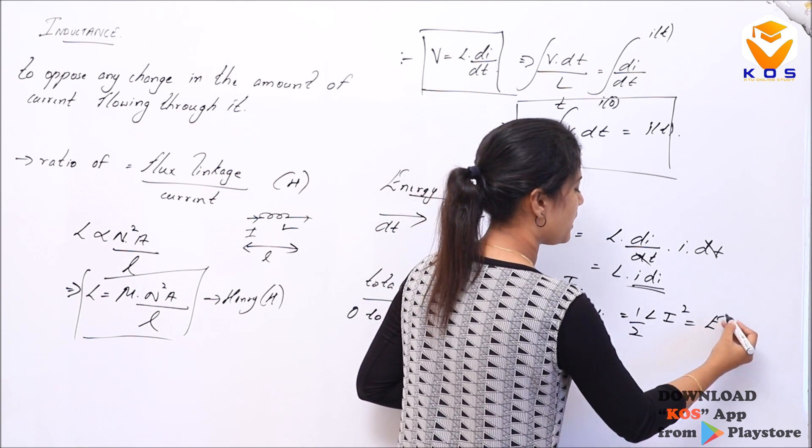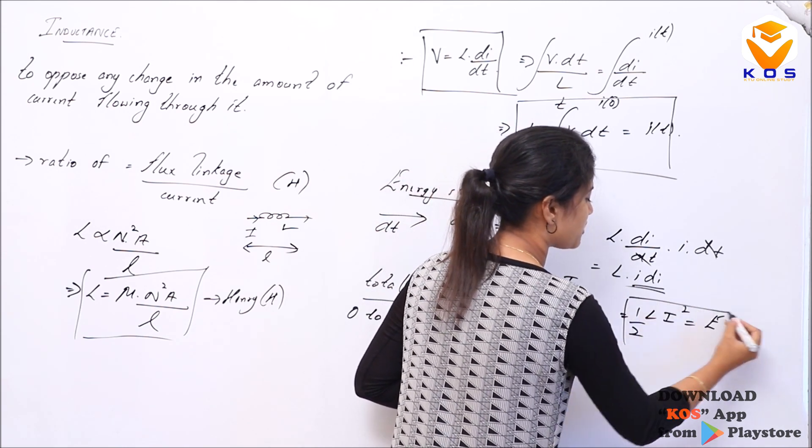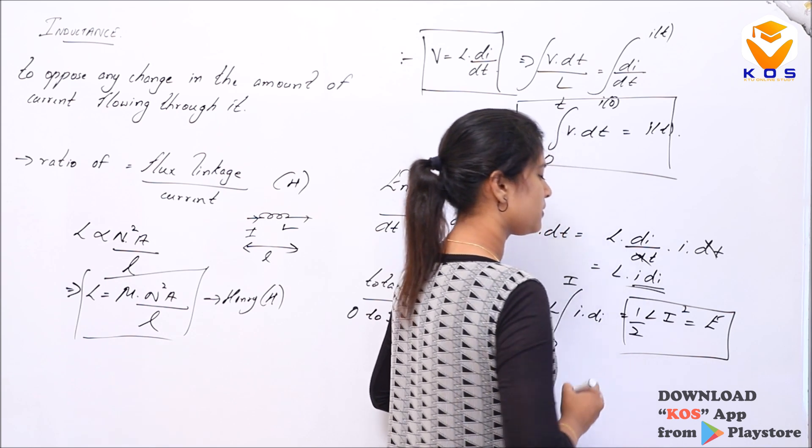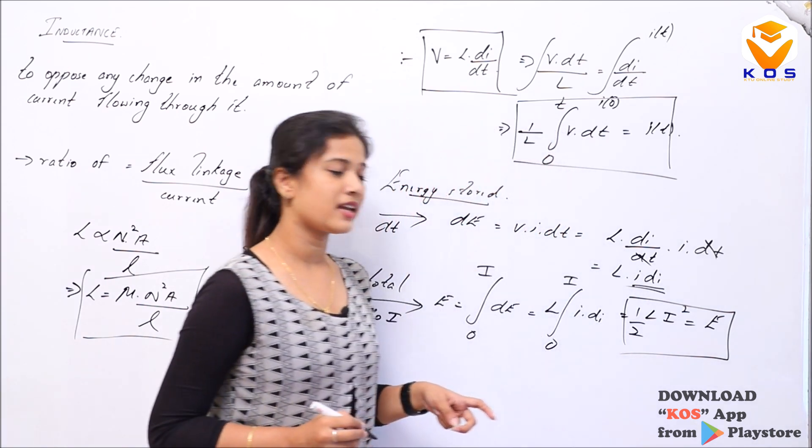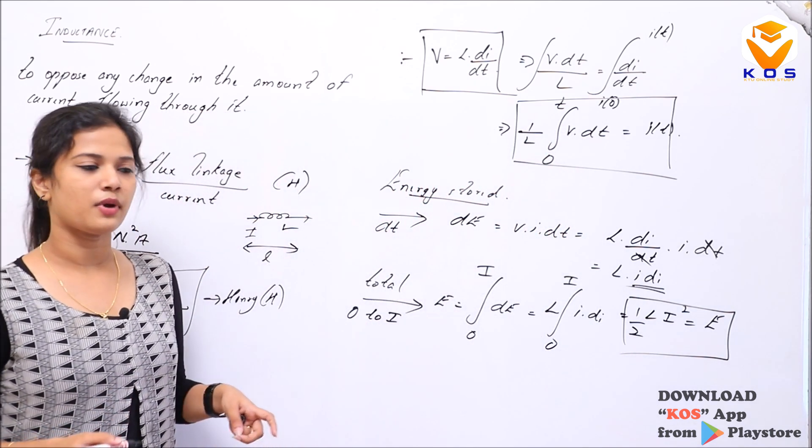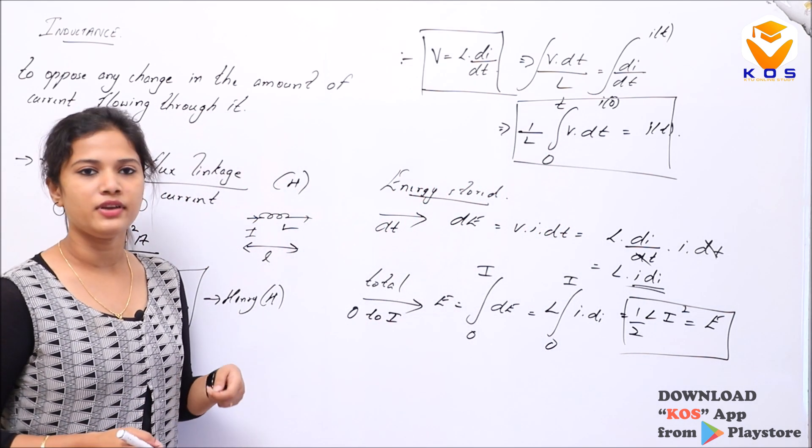So the energy stored in an inductor is half L I squared. Comparing with the capacitor, energy stored in a capacitor is half C V squared, while for the inductor it is half L I squared.